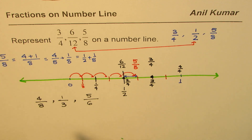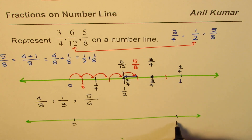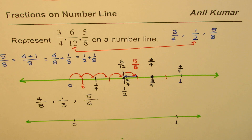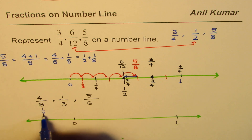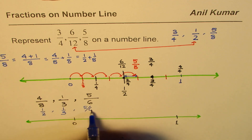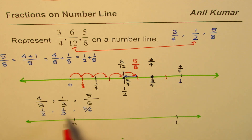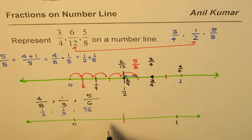Here is a quick solution. Draw a line, mark 0 and mark 1 — these numbers are all between 0 and 1. Note that 4/8 equals half. So we are looking for half, 1/3, and 5/6. Half is easy — go midway and that is your first point.